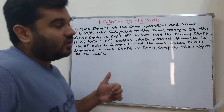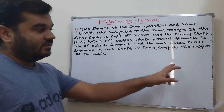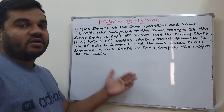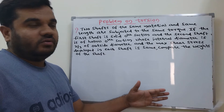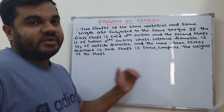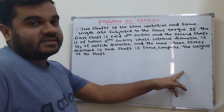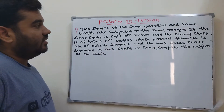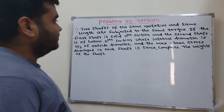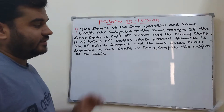One is the torque equation for a solid circular shaft and the other is the torque equation for the hollow shaft. These two equations we derived in the previous video, and on the basis of these formulas today we will solve a problem. First I will read the problem, we will analyze it, then we will start to solve it.